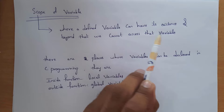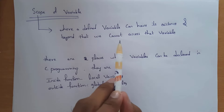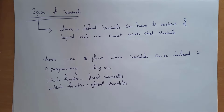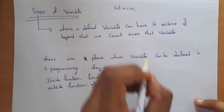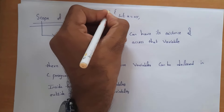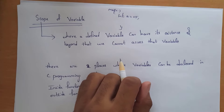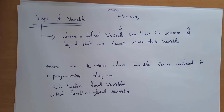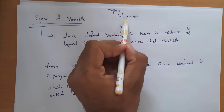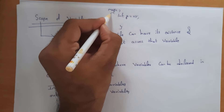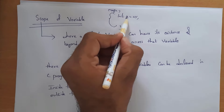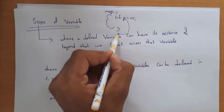First I will explain scope of a variable. Scope is where a defined variable can have its existence — beyond that we cannot access that variable. For example, if you define a variable like int a equal to 10, and I declare this variable inside the main function, then the existence of variable a is only inside the main function.